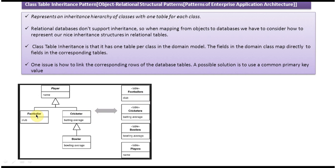If you want to store Footballer information, you have to store it in both the Player table and the Footballer table. Similarly, if you want to retrieve Footballer information from the database, you have to consult two tables: the Footballer table and the Player table.